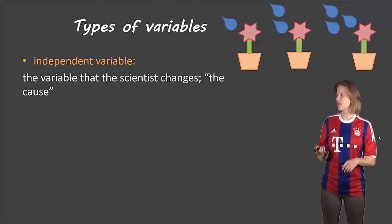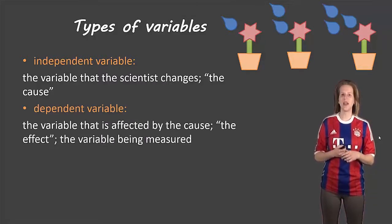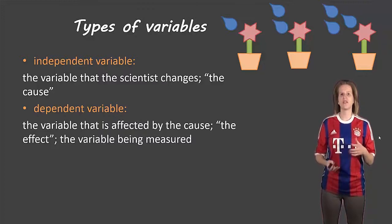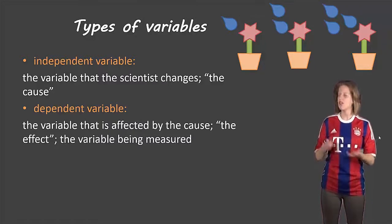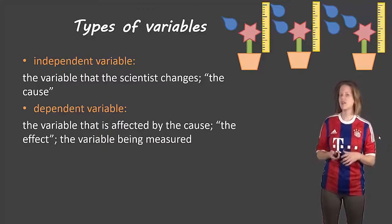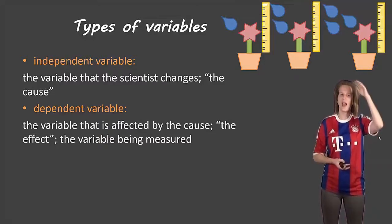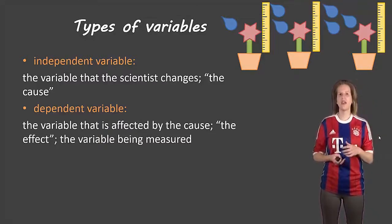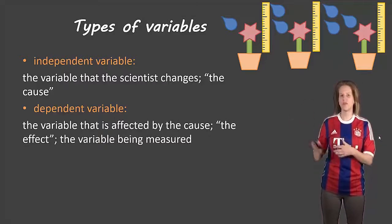The second type of variable is the dependent variable. This is the thing that we are actually measuring, or sometimes it's called the effect. So in the case with our plants, maybe we're measuring how much they grow in height. The dependent variable is that height growth, and it's caused by the amount of water that we're giving them.